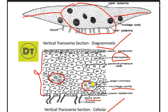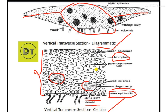Here we are going to discuss the Nostoc type of algae colonies found in the mucilage cavities. The lower epidermis bears rhizoids, which are smooth-walled rhizoids. This is a simple but very important topic from the examination point of view. This is basically a cellular diagram.